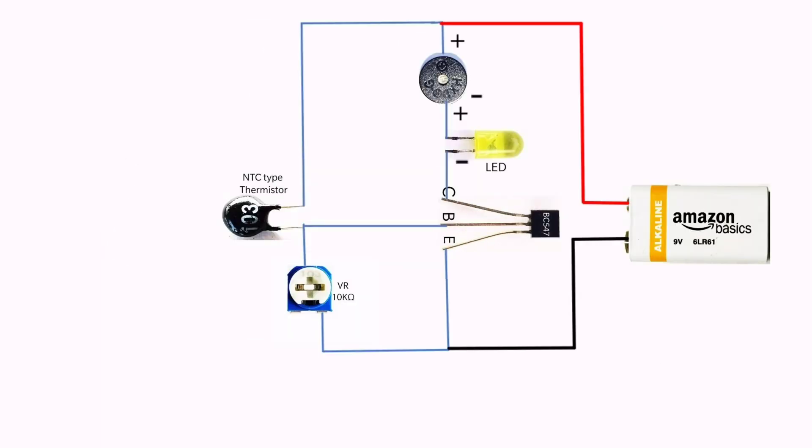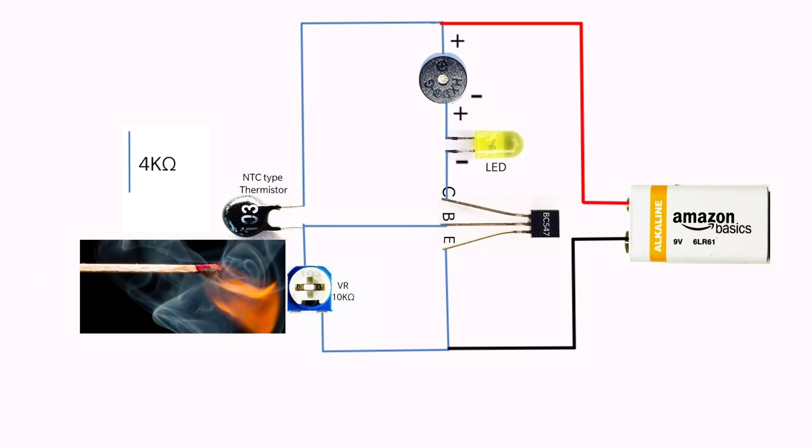Here in this circuit, the resistive thermistor depends on the heat. If the thermistor absorbs the heat, then its resistivity will decrease.